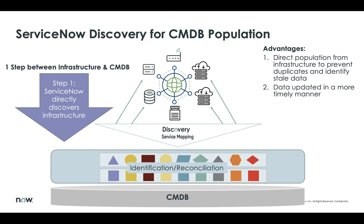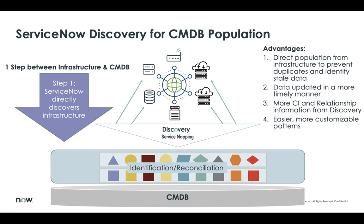Data is updated in a timely fashion — when we run discovery, we pull back the data and relationships and populate the CMDB with an updated timestamp, so you know exactly when that data was pulled from that endpoint. Discovery is purpose-built for bringing relationships into the CMDB, making sure you have the right relationships between CIs. The patterns that Discovery uses to discover infrastructure are easily customizable to pick up new attributes, create new relationships, or even discover new technologies that may exist in the enterprise.